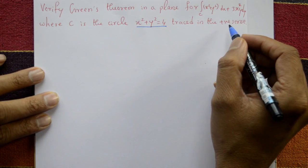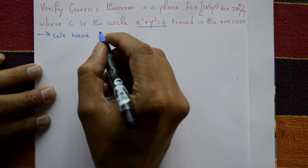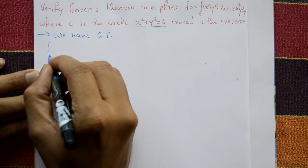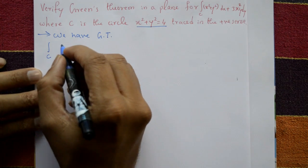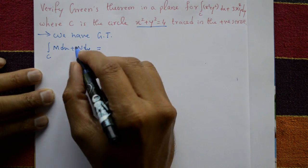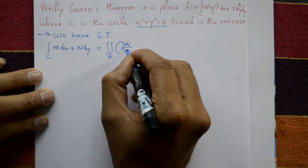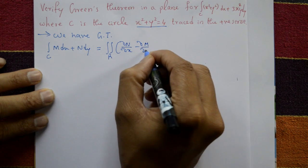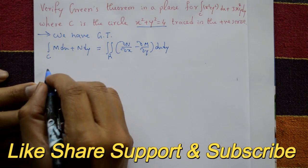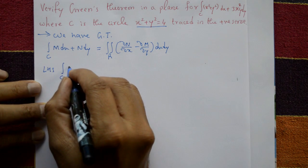Solution: Green's theorem states that the line integral over a closed curve C of M dx + N dy equals the double integral over the region R of (∂N/∂x − ∂M/∂y) dx dy. Now take the left-hand side (LHS).